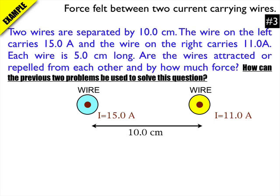And so, if you've been following along, we can actually use information from some of the previous problems. First off, I'll tell you now that the wires are attracted. But the question is, why are these two wires attracted to each other?